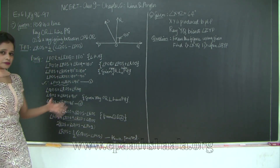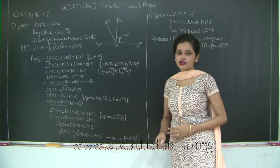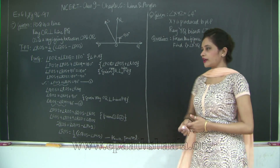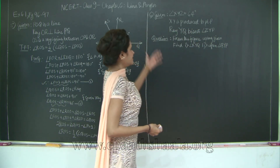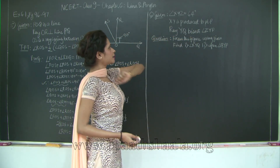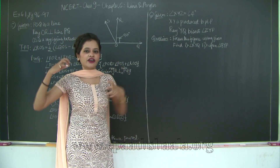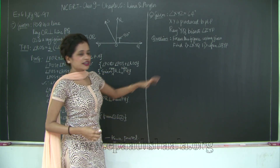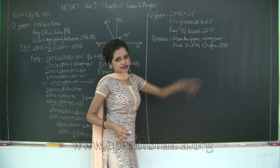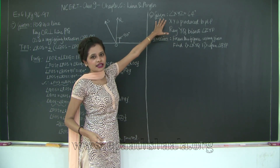So please take a look at this solution before we proceed with the last question of Exercise 6.1. We have angle XYZ equal to 64 degrees, XY is produced to point P, and ray YQ bisects angle ZYP. Since there is no diagram given, they have asked us to draw the figure using this given information and find the two required angles.